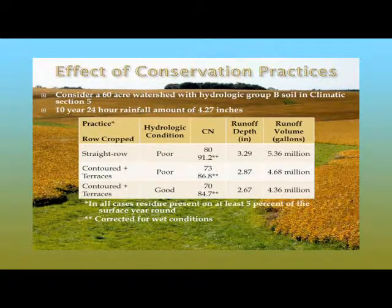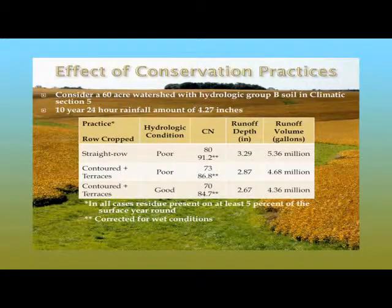Looking at the contoured plus terraces system under good hydrologic condition, we'd expect a curve number of about 85 under wet antecedent moisture conditions, a runoff depth of about 2.7 inches, and about 4.36 million gallons. Comparing contoured terraces in good condition versus straight rows in poor condition, we reduce runoff depth by about 0.6 inches and total runoff volume by about 1 million gallons for the same design storm. This is very important for designing the size of the grassed waterway — conservation systems approach matters greatly.